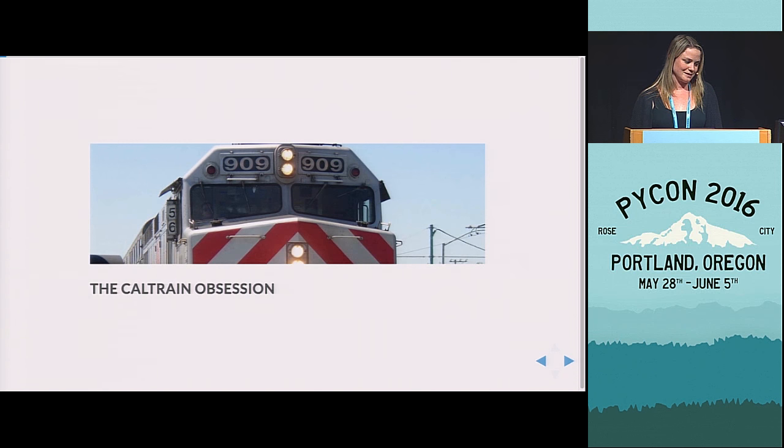We finally moved up to Mountain View, still by the train station, but thankfully with some sound insulation now. But as we were kind of, all of us are usually commuting via the Caltrain. By the way, the Caltrain is a train in the Bay Area that goes from San Francisco to San Jose.